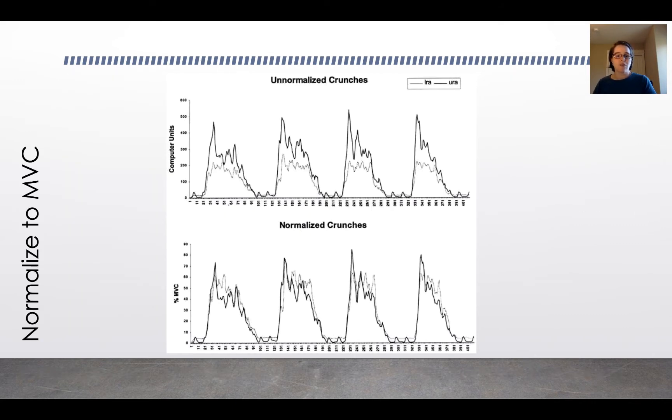And then finally another technique that gets used is to normalize your EMG outputs to a maximum voluntary contraction. So typically at the beginning of your EMG data collection you'll ask the subject to perform a maximum voluntary contraction, and the goal is to get the maximum possible muscle output, muscle contraction, muscle activity on the EMG sensors so that you can normalize everything relative to that.